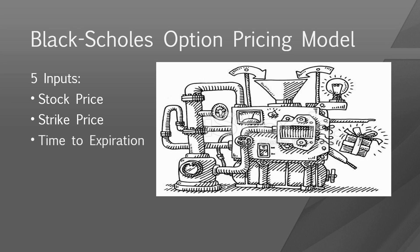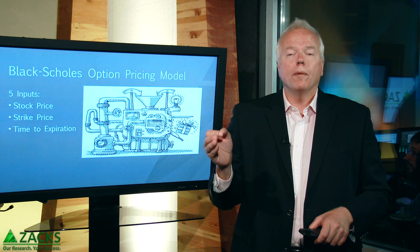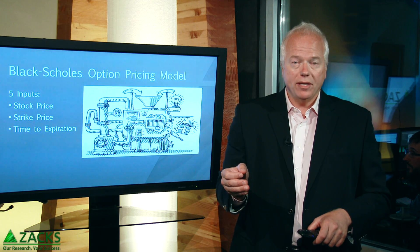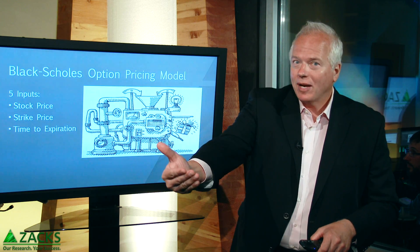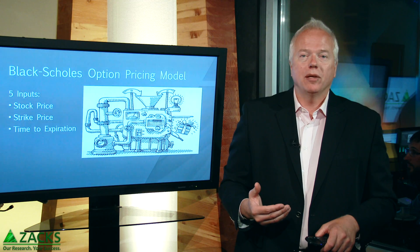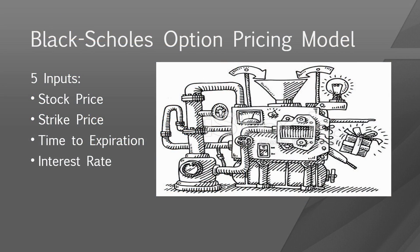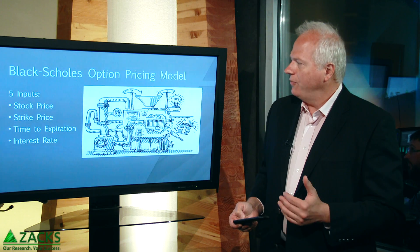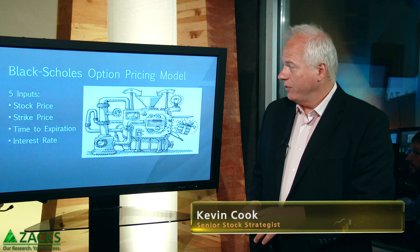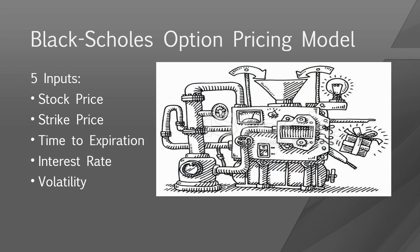The next input is the time to expiration — how far out does that option go? This is one of the biggest determinants of option pricing. As you probably know, the more time an option has in it, the more expensive its premium is. We also need to know something about interest rates. In the current environment with interest rates so low, they have a sort of negligible effect compared to all these other factors. And then the last of our five inputs is volatility.